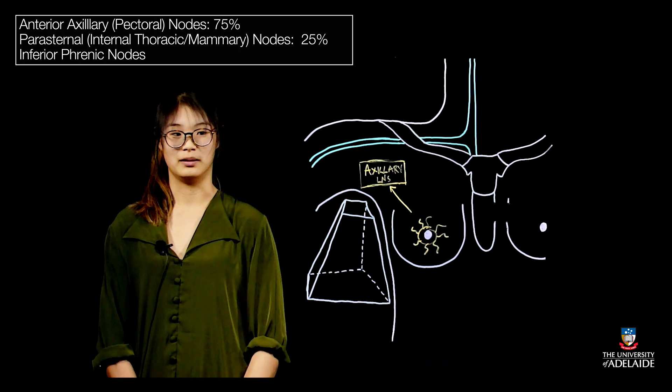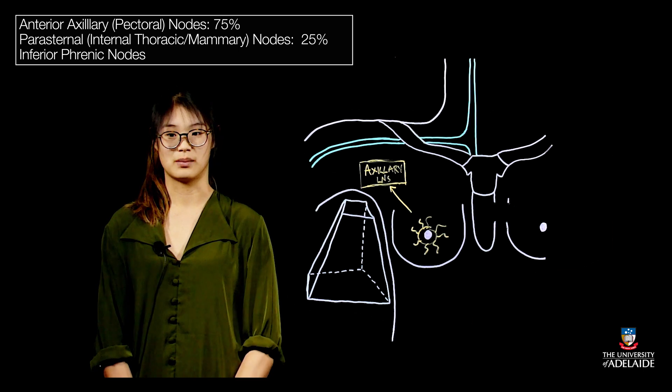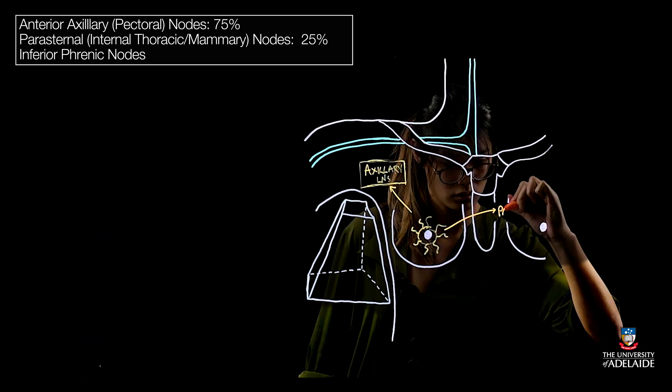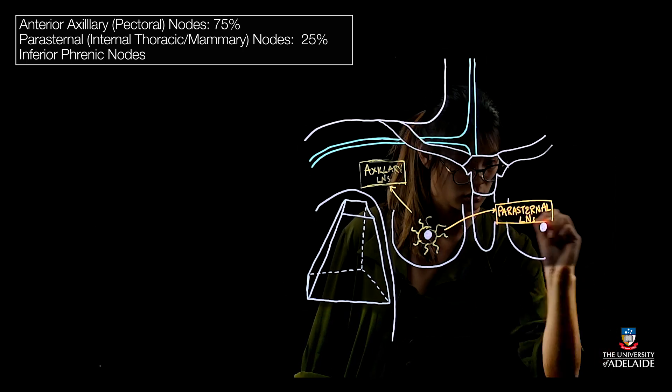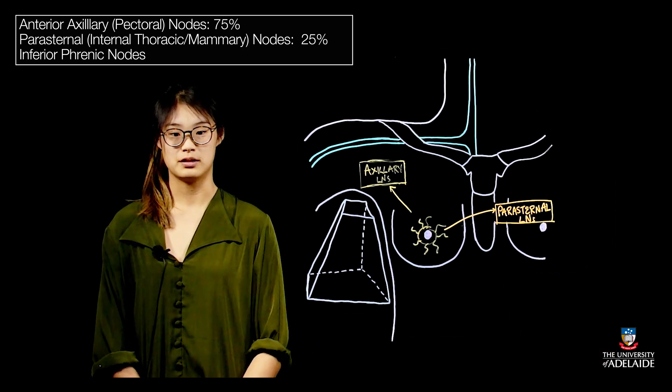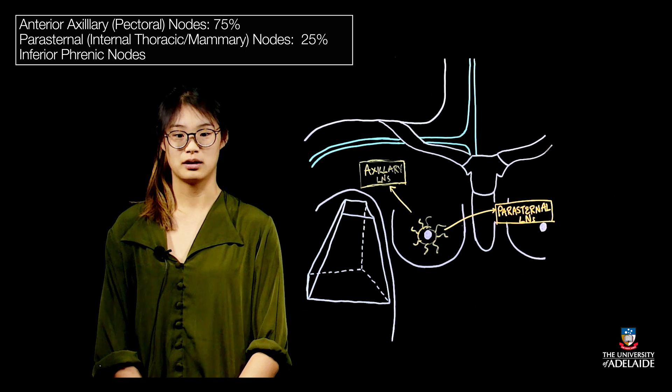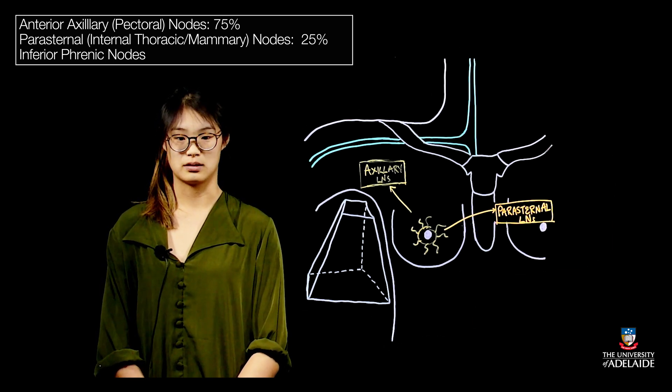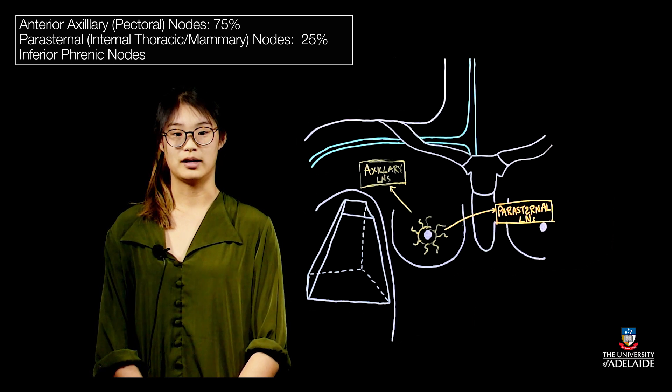Approximately 25% of the lymph on the medial aspect of the subareolar plexus will go to the parasternal lymph nodes. From here lymph drains to the bronchomediastinal trunk which then goes to the right lymphatic duct on the right-hand side or the thoracic duct on the left-hand side and to the contralateral breast.